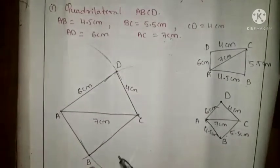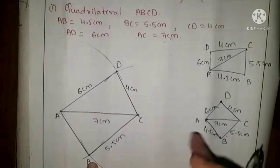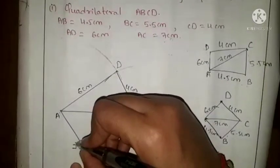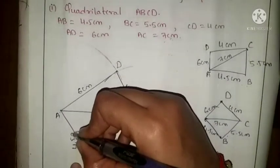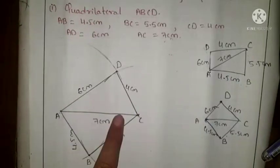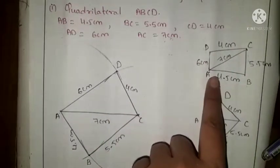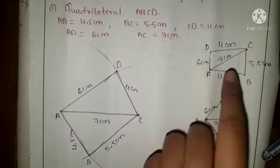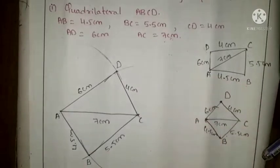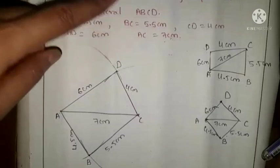BC = 5.5 cm and AB = 4.5 cm. This completes our construction. You can choose either AC as a base side or any of the four sides of the quadrilateral as a base side — both are correct construction methods. So this completes the first question: Quadrilateral ABCD.